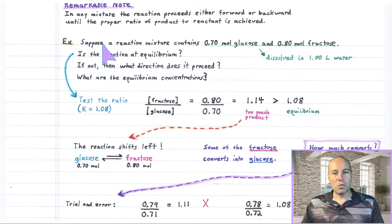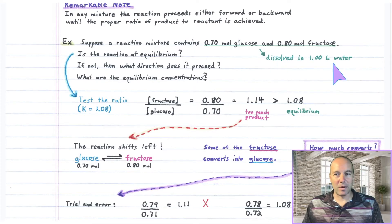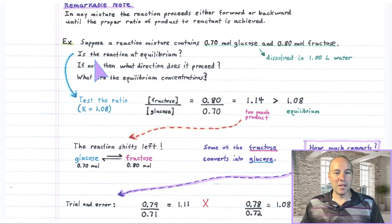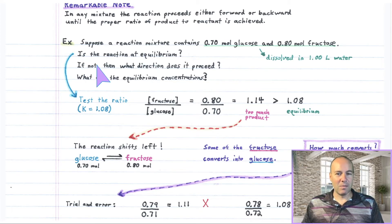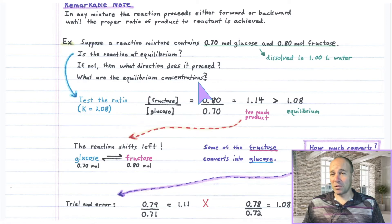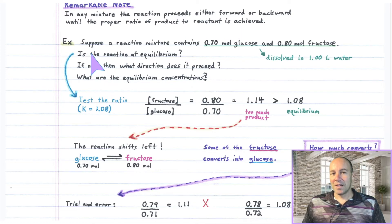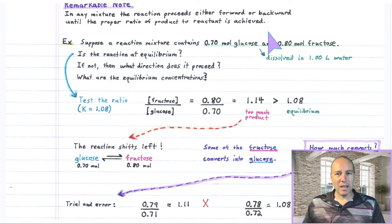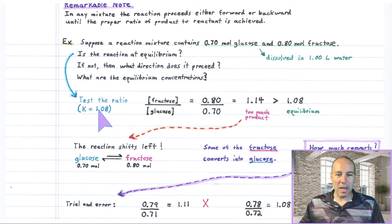Here's another example. Suppose a reaction mixture contains 0.70 moles of glucose and 0.80 moles of fructose dissolved in a liter of water. Let's answer three questions: Is the reaction at equilibrium? If not, what direction does it need to proceed to get to equilibrium? And what are the equilibrium concentrations after it does get there? To tell if the reaction is at equilibrium, we calculate the ratio of product over reactant and see if it matches 1.08.